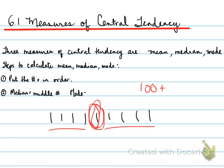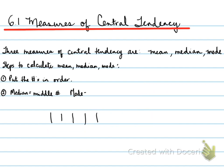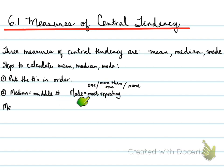Going back to what the median is: it is the middle number. The mode — because we put the data in order — you'll be able to see the most repeating number. Sometimes you have one mode, sometimes more than one mode where multiple numbers repeat equally, and finally you might have no mode whatsoever. Of all the measures of central tendency, mode is the only one that could possibly not exist.